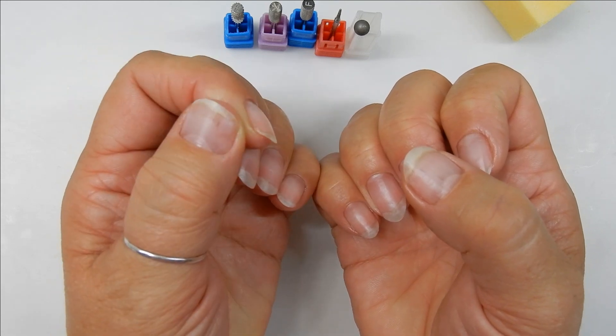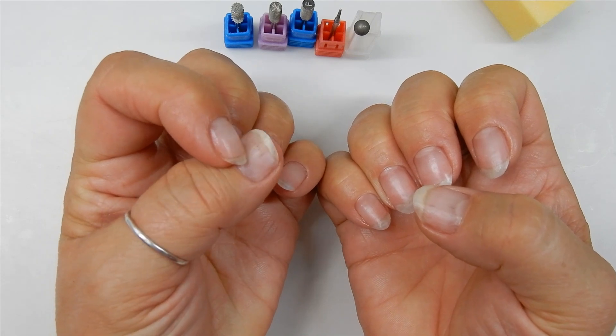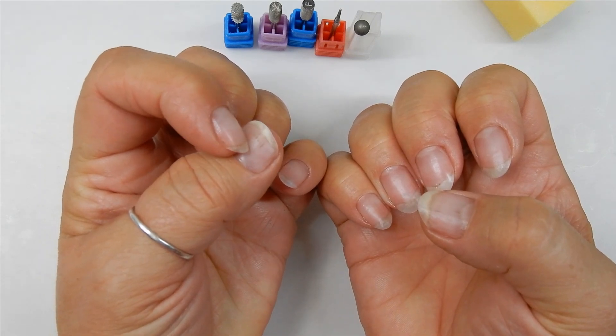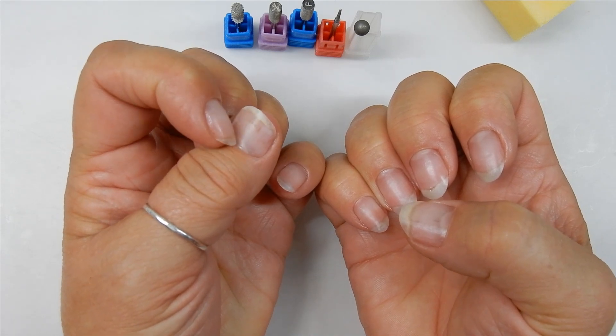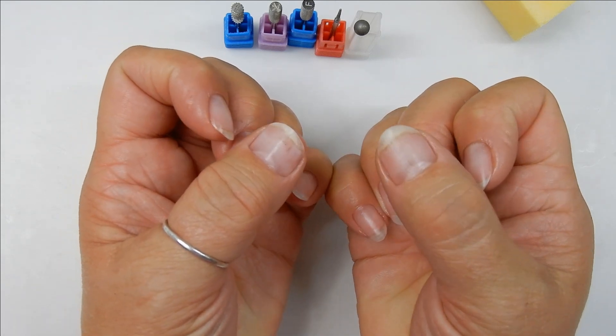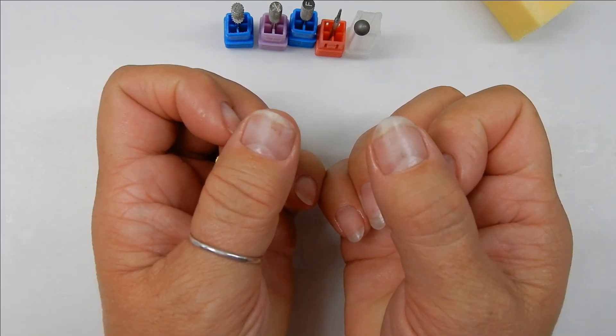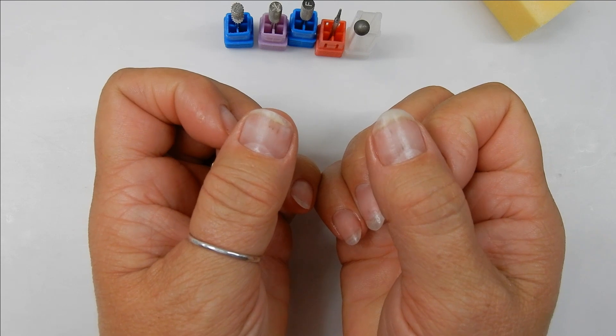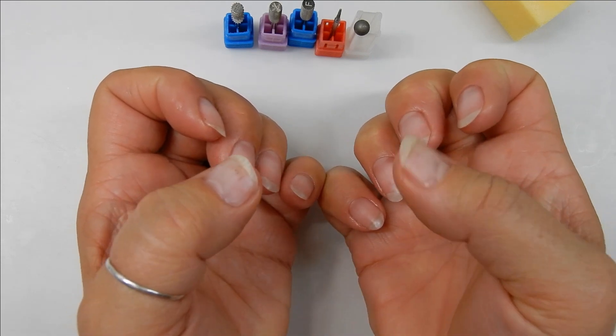But anyways, you can see a few little splinter hemorrhages. That's what dark lines are, and those are caused by injuries, bumping your nails. And for me, that would be getting them caught in the kitchen cupboards. I do that a lot and it kind of bends your nail.